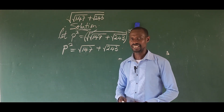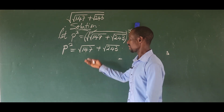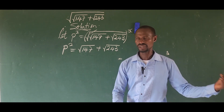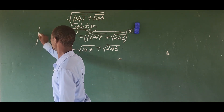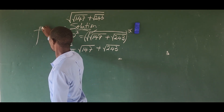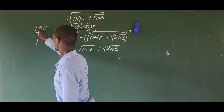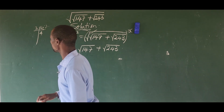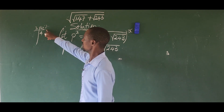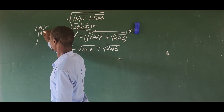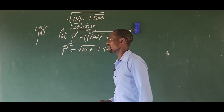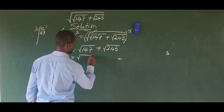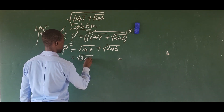Now we think of breaking each quantity down. Can we use two to divide 147? No, two cannot divide this. Can we use three? Yes. Three into 147 gives us 3 times 49, since 3 into 14 gives 4 remainder 2, and 3 into 27 gives 9. So 147 splits into 3 times 49, giving us the square root of 3 times 49.